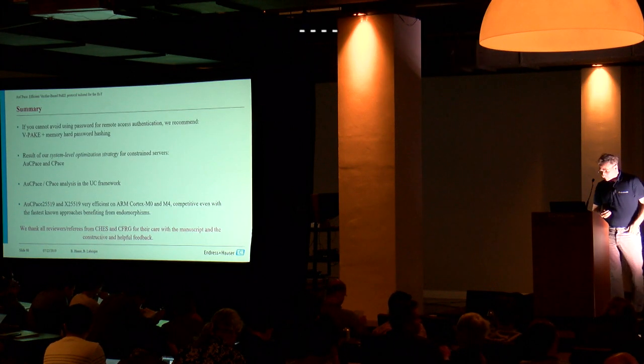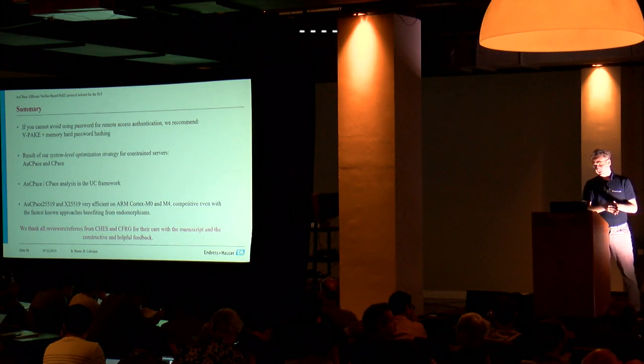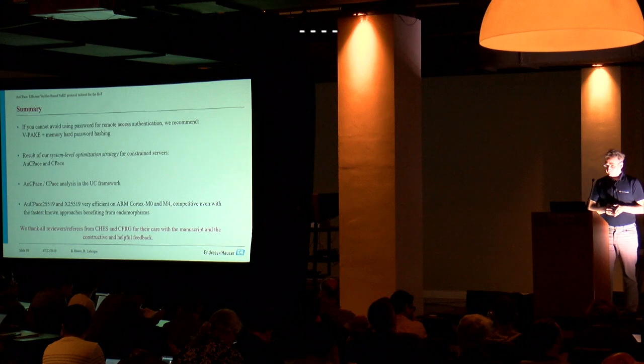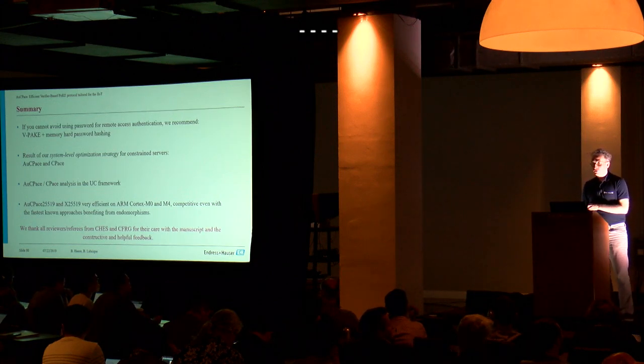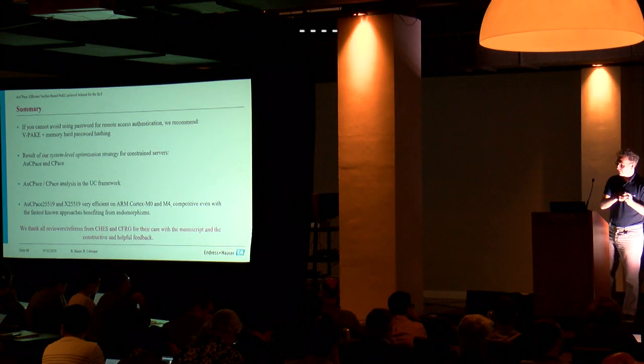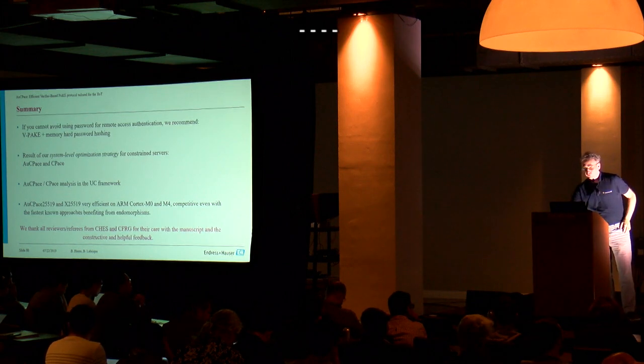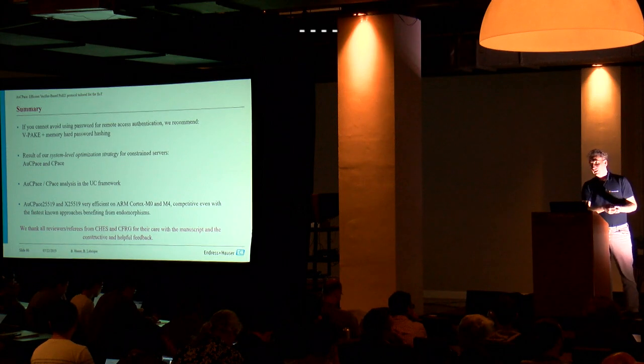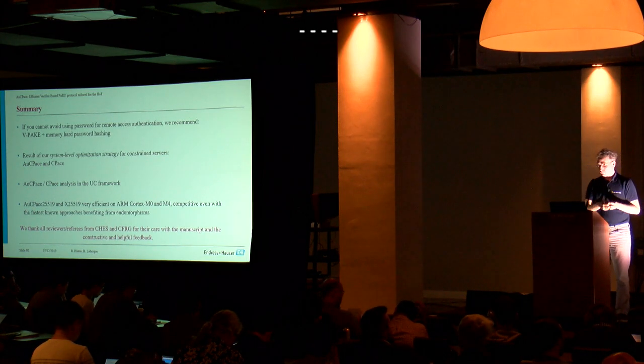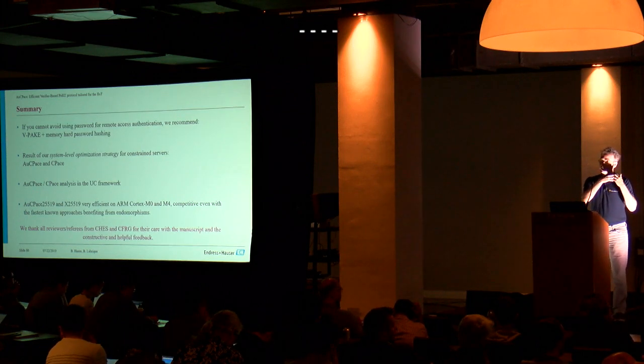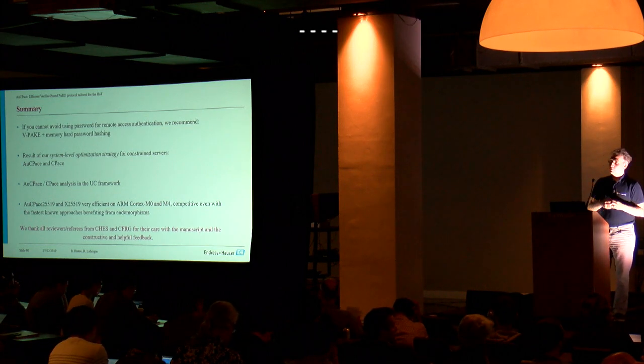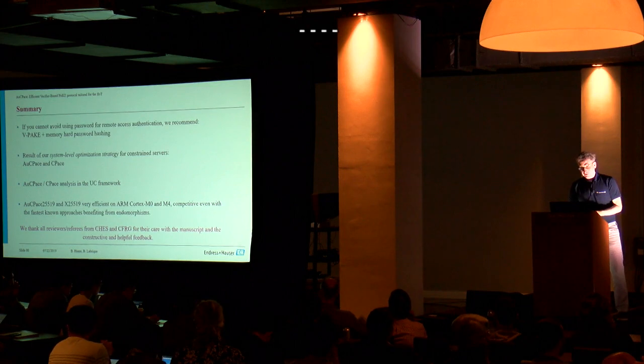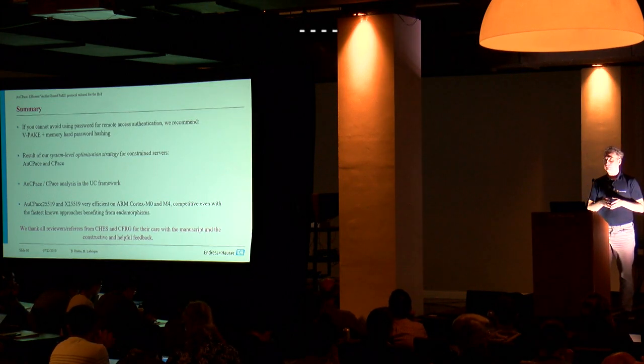So let me summarize. If you cannot avoid using passwords for remote access authentication, we recommend to use the combination of VPAKE protocol and memory hard password hashing. The result of our system level optimization strategy for the constraint servers are our proposals AugPACHE and C-PACHE. We have shown security proof for adaptive adversaries in the UC framework and we have shown that this protocol could be implemented very efficiently on small microcontrollers such as ARM Cortex M0 and Cortex M4 and that this implementation could be made even competitive with the fastest known approaches on these controllers which benefit from endomorphisms. We would like to thank all the reviewers from CHES and also from CFRG for their careful review of the manuscript and their constructive and helpful feedback. Thank you.